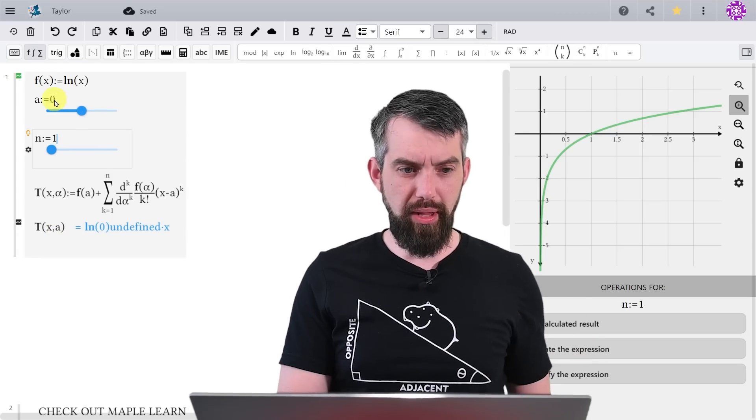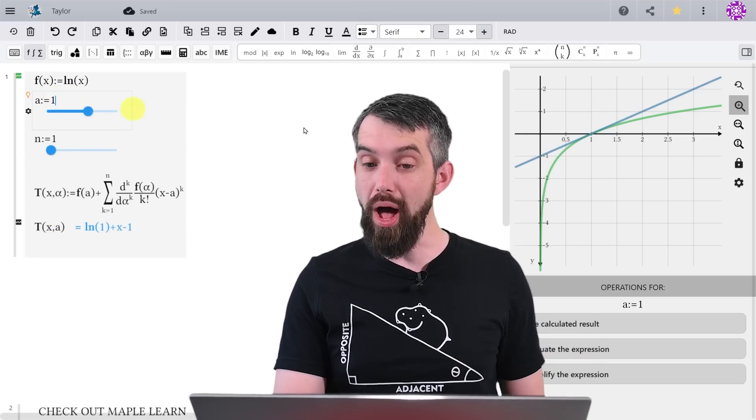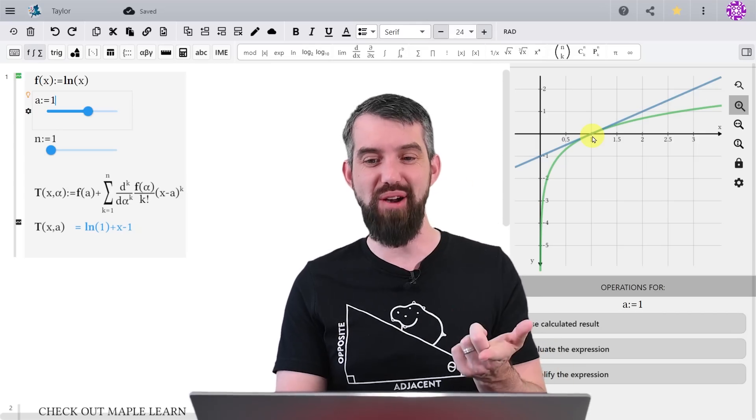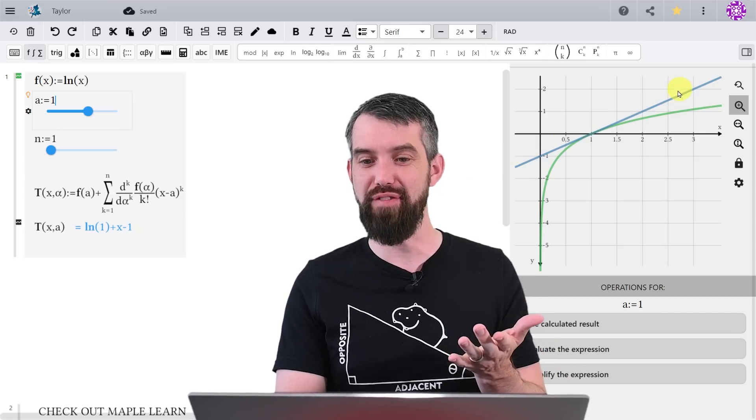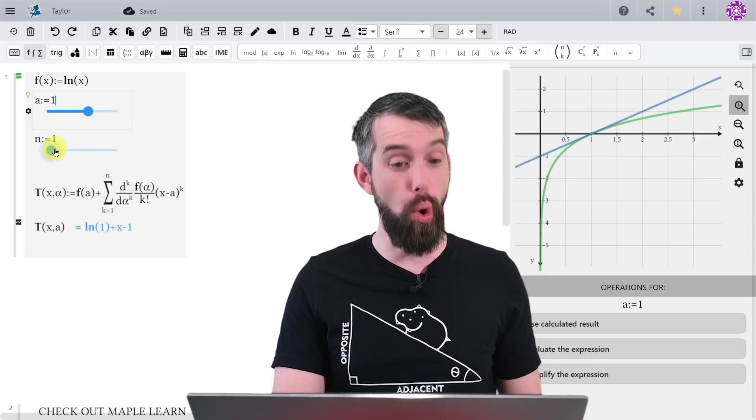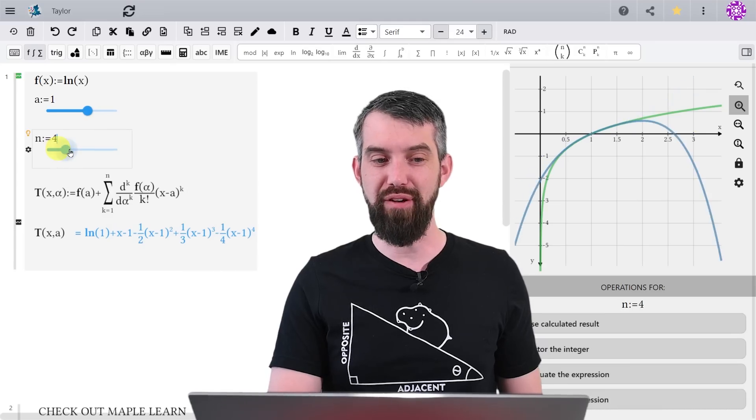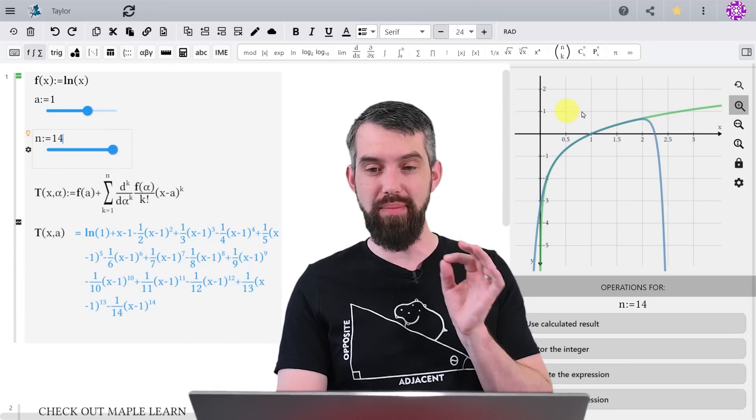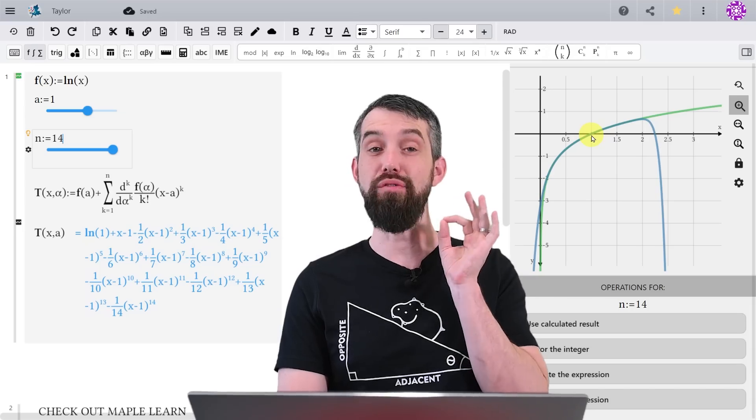So for example, instead of a equal to 0, I can plug in a equal to 1. And now I can approximate logarithm around the value of 1. That's entirely fine to do with a linear approximation, or as I increase the value of my n here, I can get a better and better approximation near the value of 1.